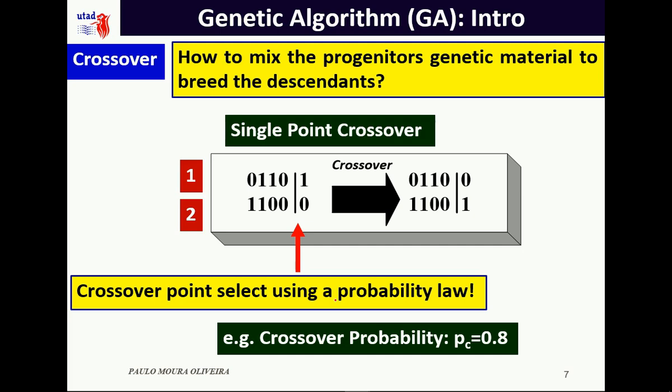In this case we switch the bits at the crossover point — the one is placed here and zero goes up. From the two parents we generate two descendants. The crossover probability PC should have a high value, because crossover is an operator that happens at higher rates in nature.